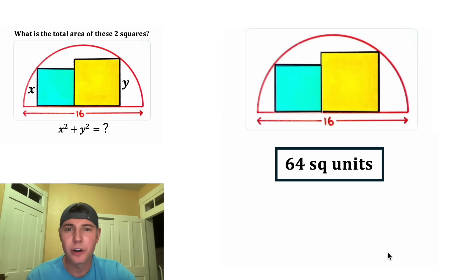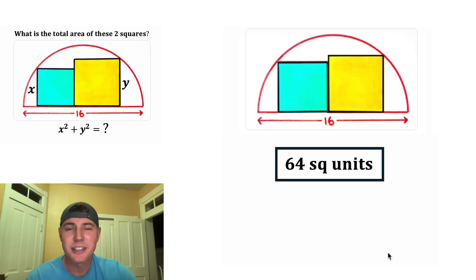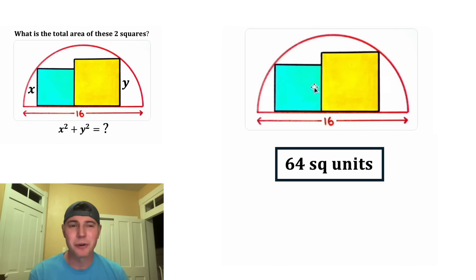And that'll be true for all of these versions of this. In every single one of these scenarios, the area of the two squares is equal to 64 square units. How exciting. I think this problem is Brilliant.